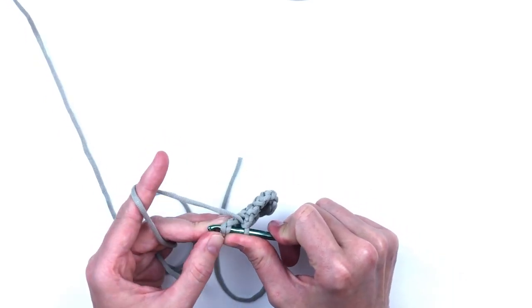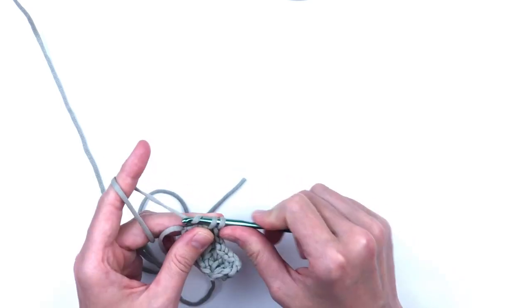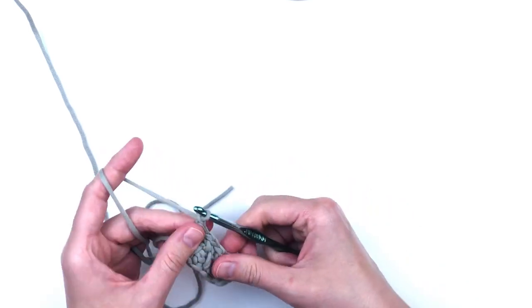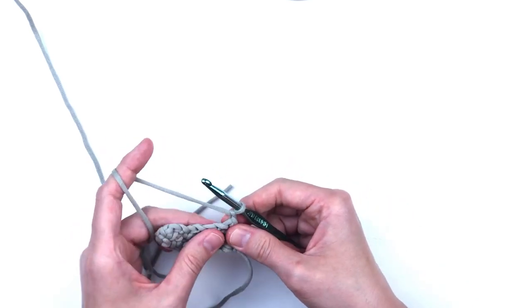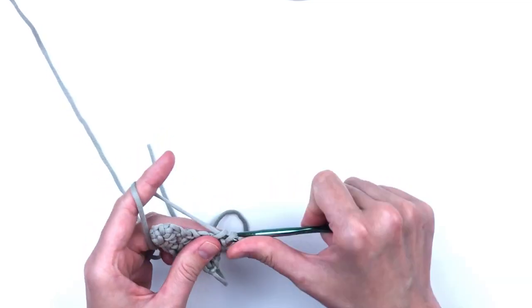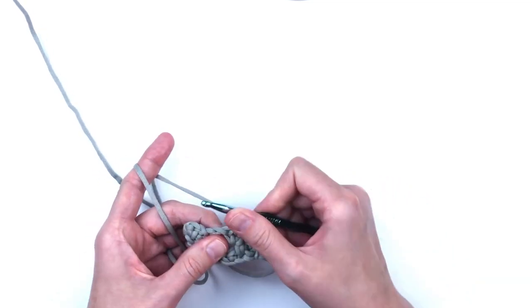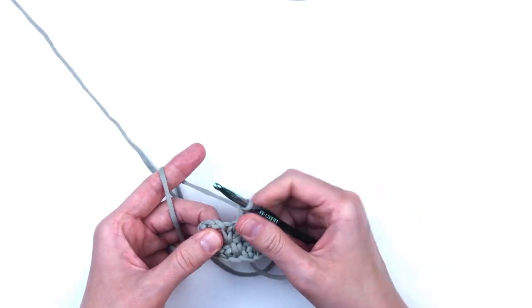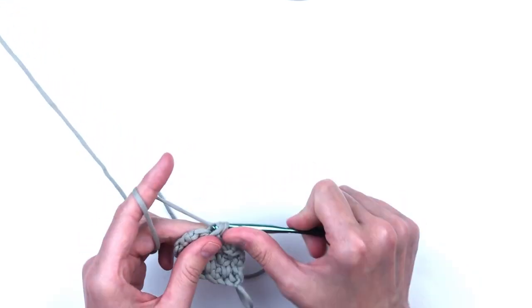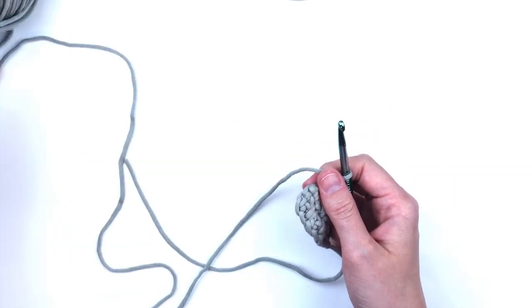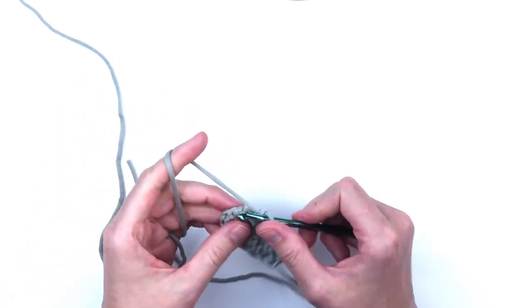You will want to chain loosely in the chains before you turn in each row because you're going to have to work back into them. Chain one and turn. In every chain one space you're going to make a single crochet and chain one and then repeat all the way across. Make sure that you put a single crochet in the chain one that you made before you turned from the previous row below.